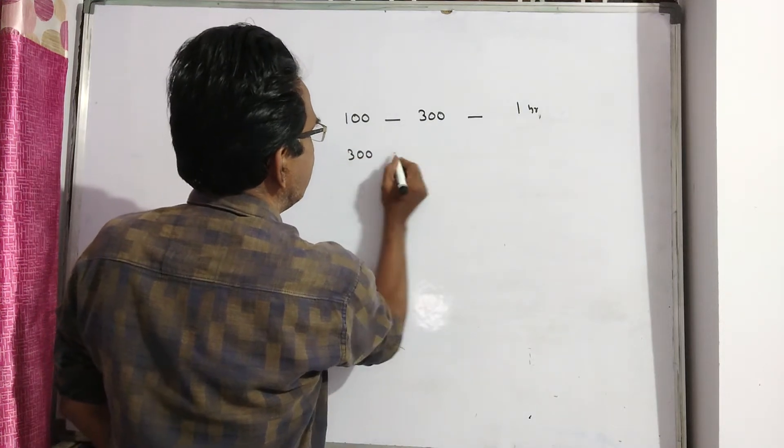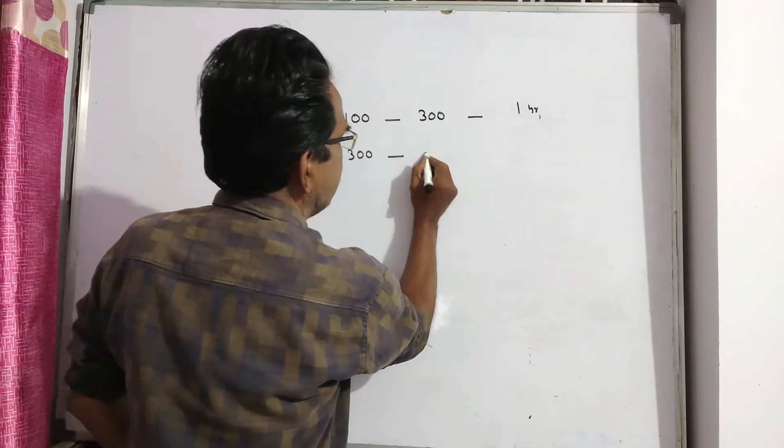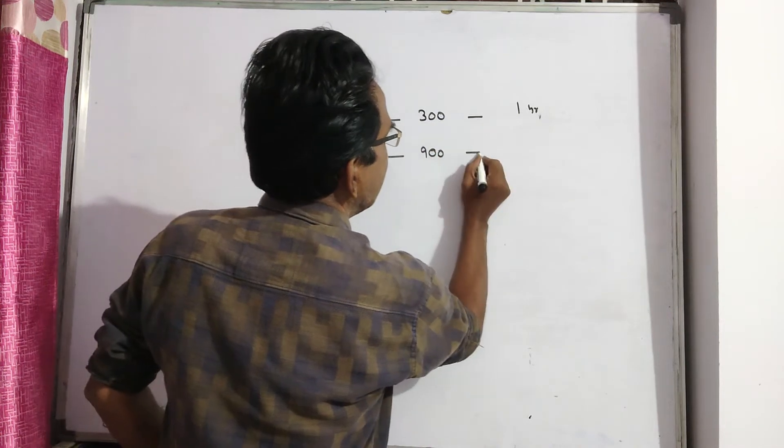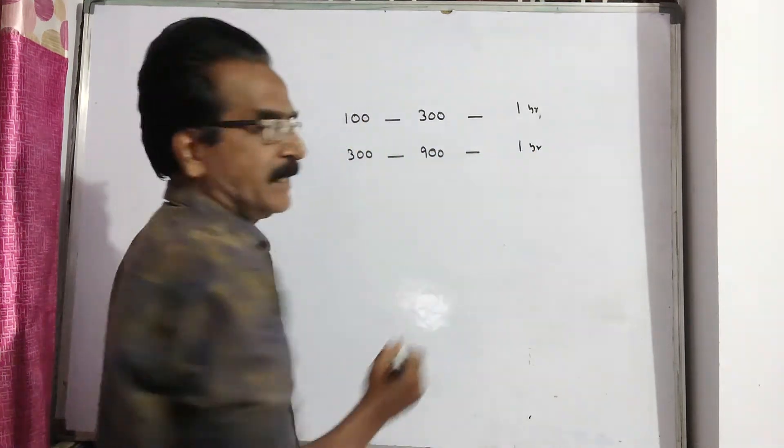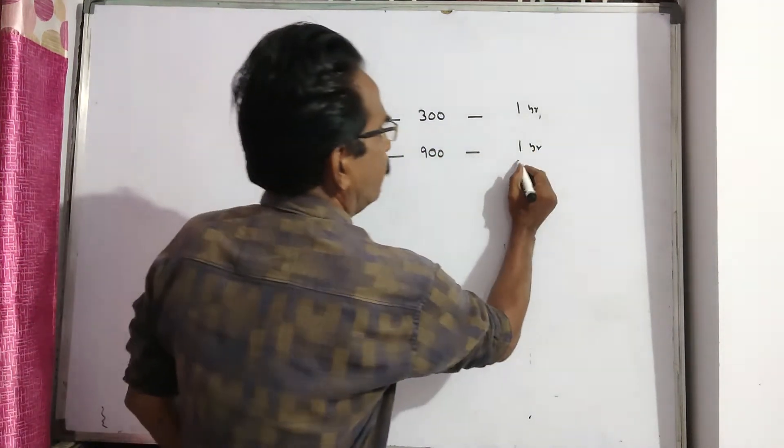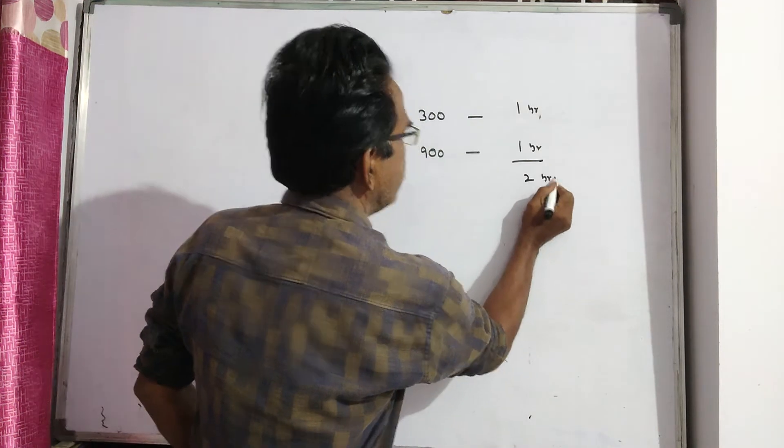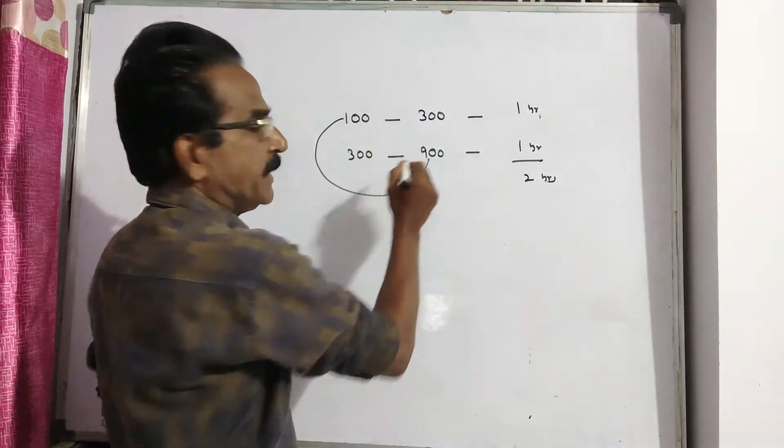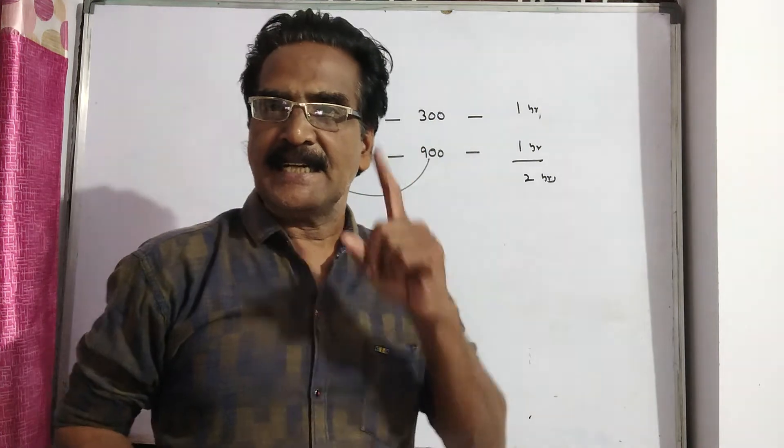This 300 again becomes 300 into 3, which is 900 in another one year. That means in a span of two years, 100 becomes 900—that is nine times.